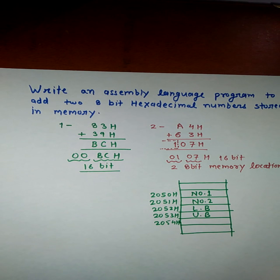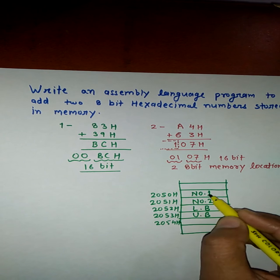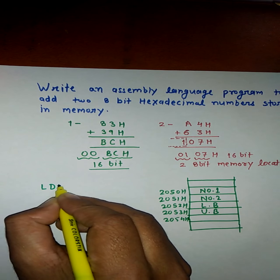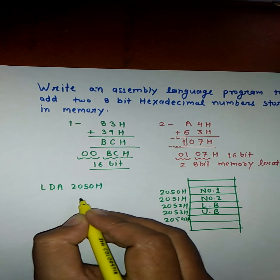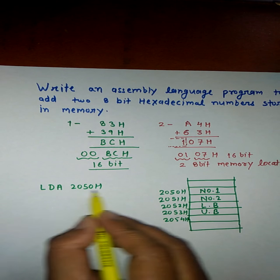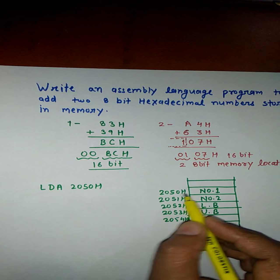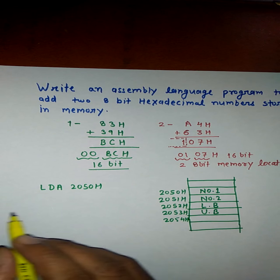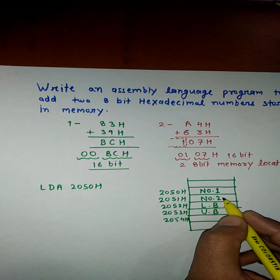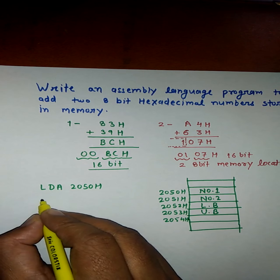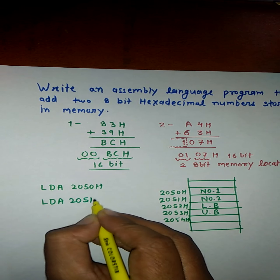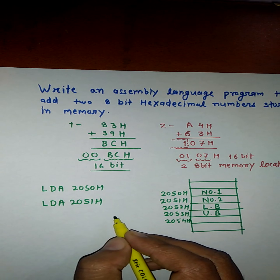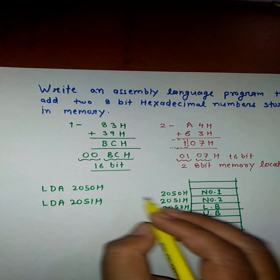To perform addition, we first bring the two numbers from memory into the microprocessor. The simplest instruction is LDA. We write LDA 2050H — the microprocessor will bring the value at address 2050H into the accumulator, which is number 1. Then we write LDA 2051H so the accumulator holds number 2 from address 2051H.